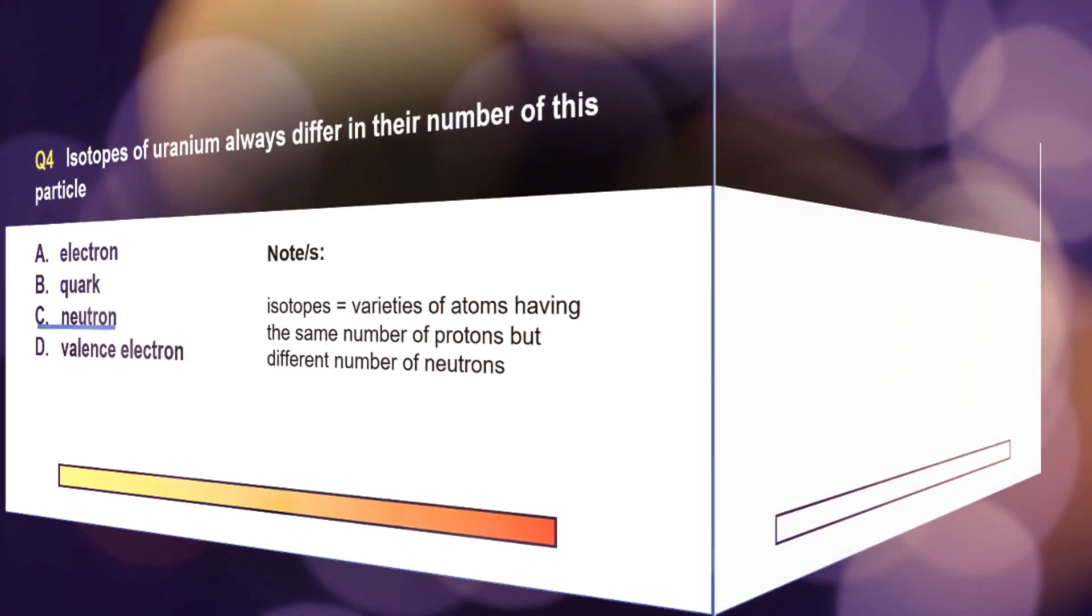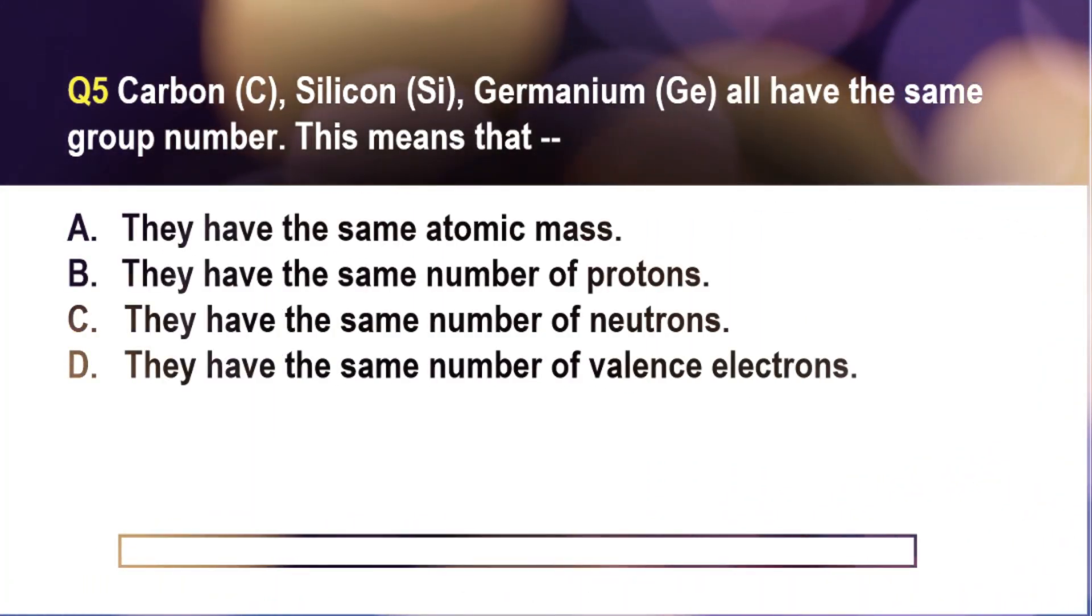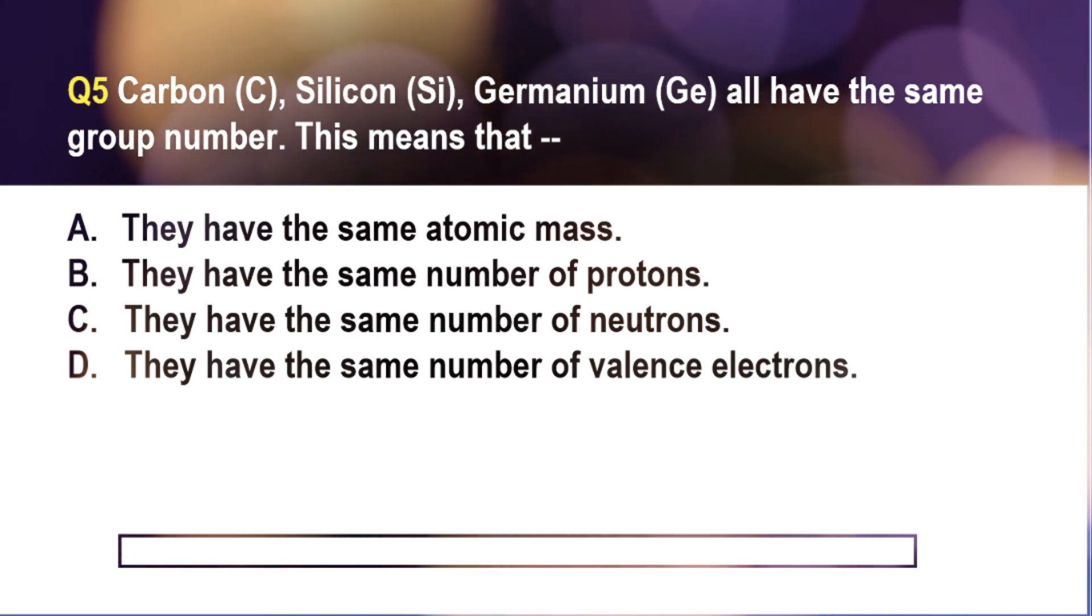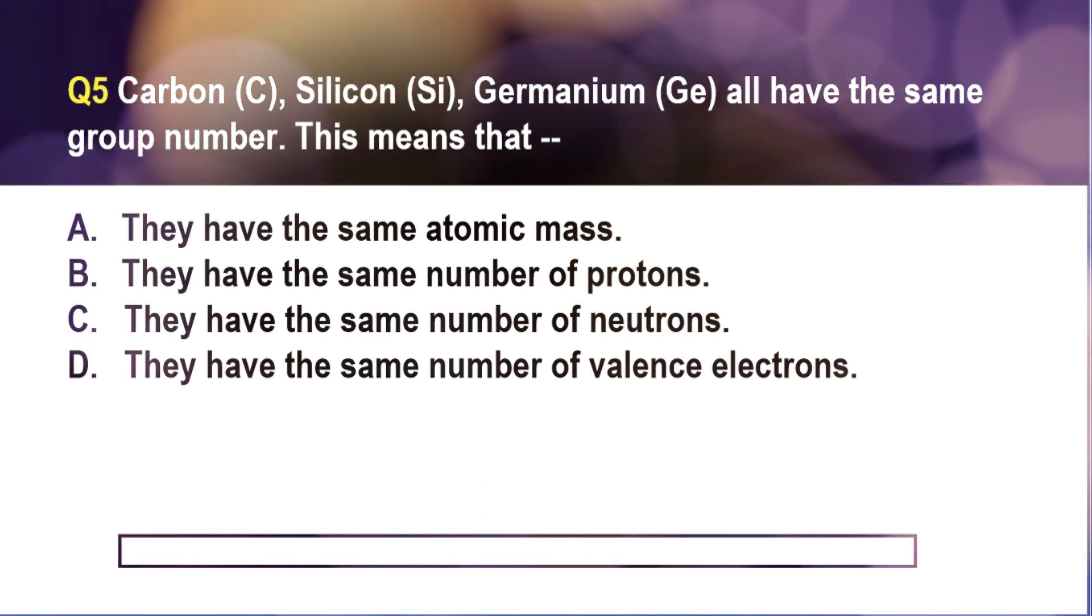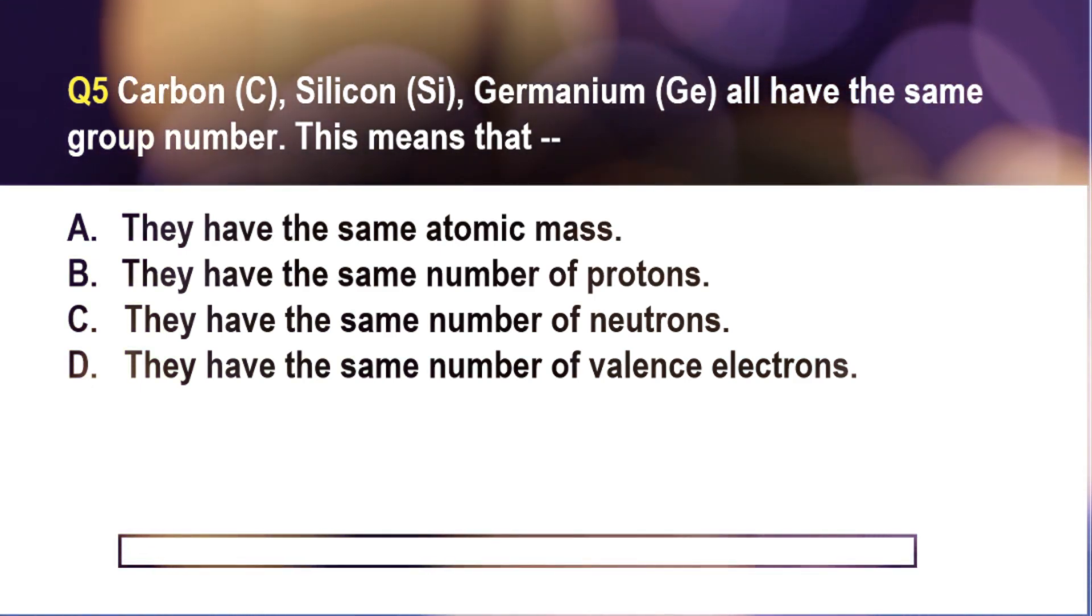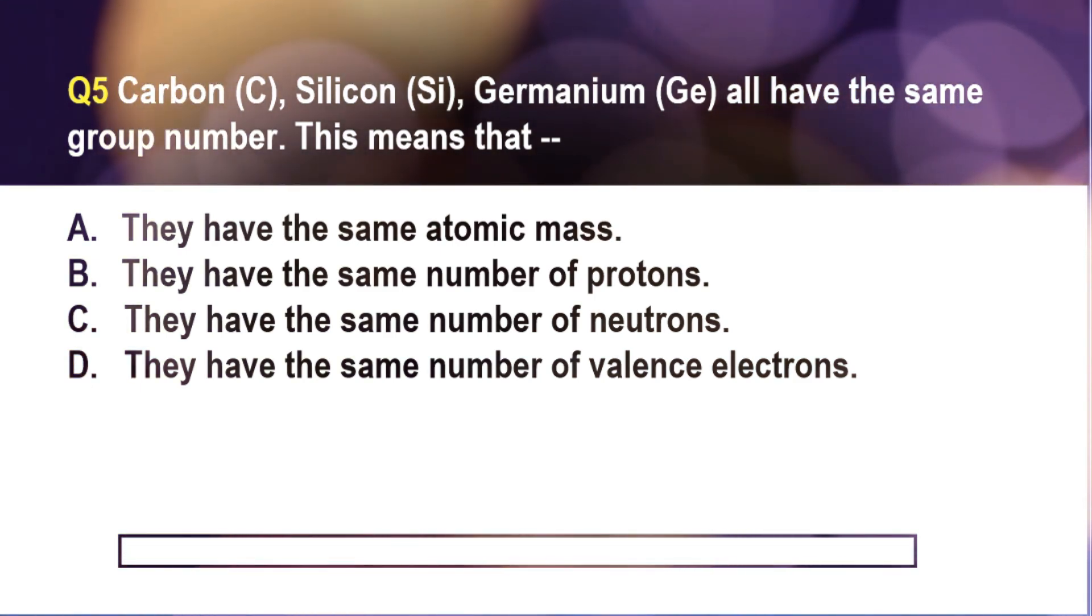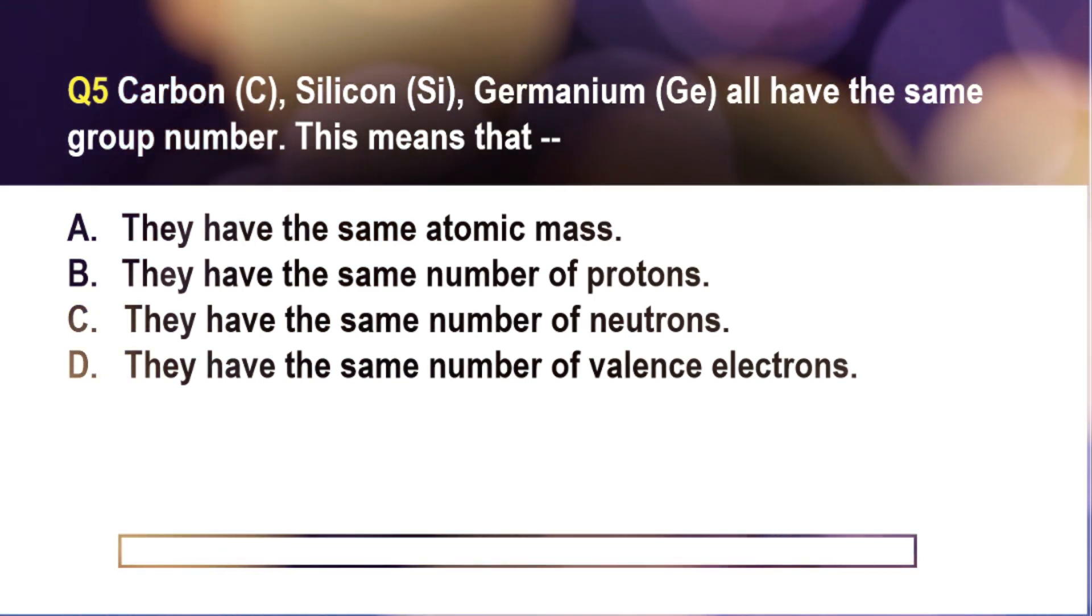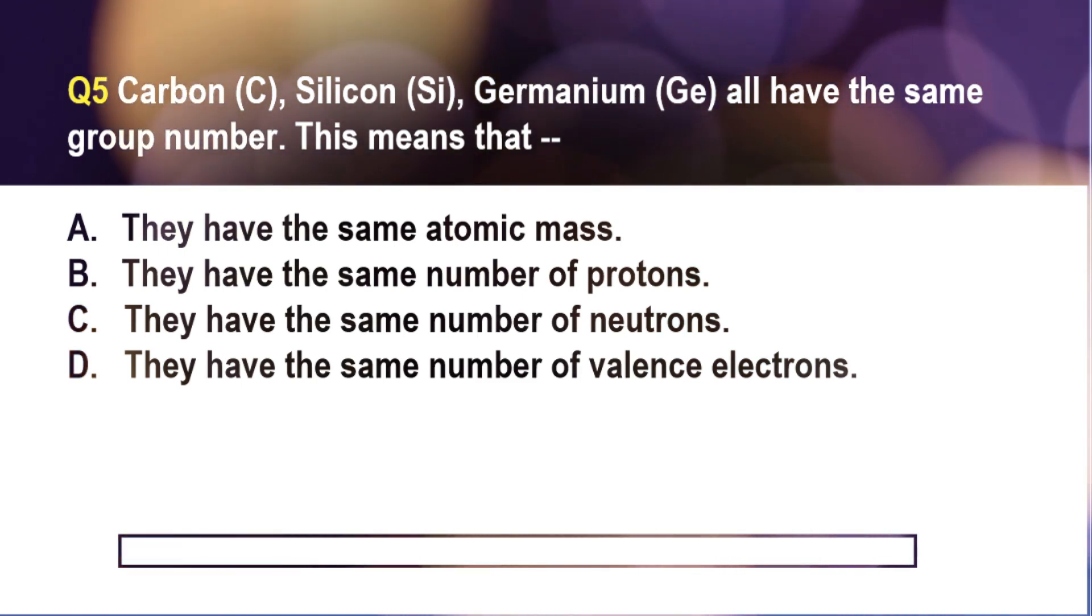Question number five. Carbon, silicon, germanium all have the same group number. This means that A. They have the same atomic mass, B. They have the same number of protons, C. They have the same number of neutrons, and D. They have the same number of valence electrons.